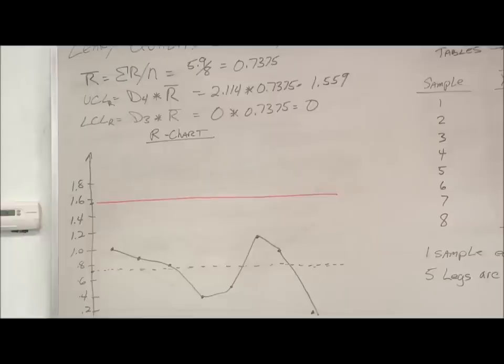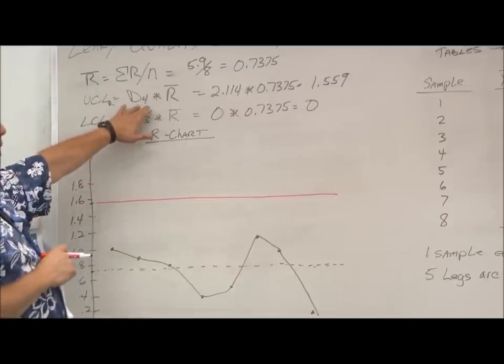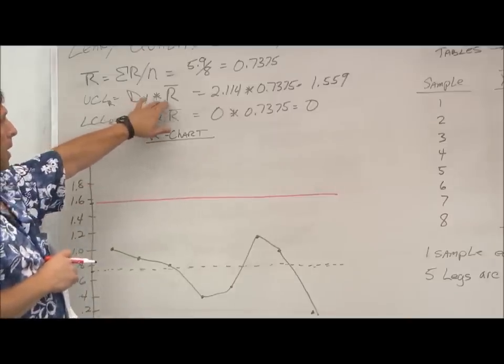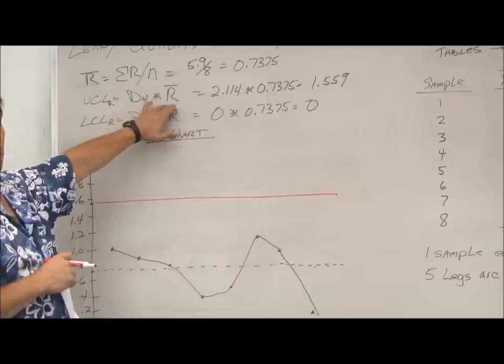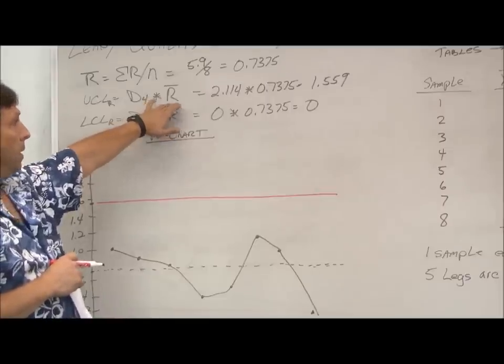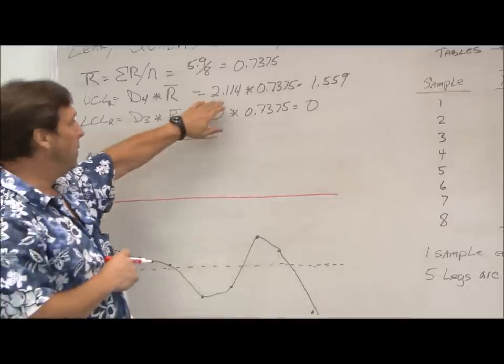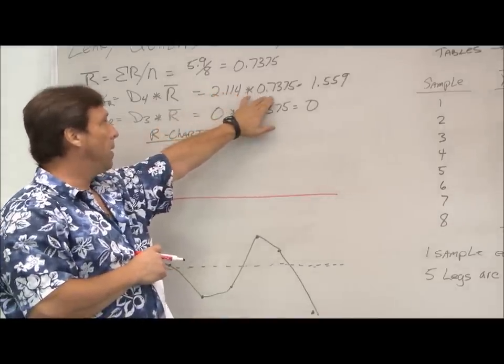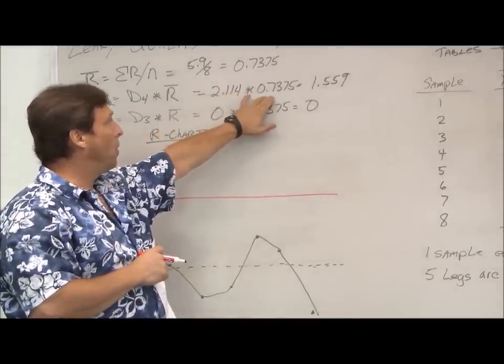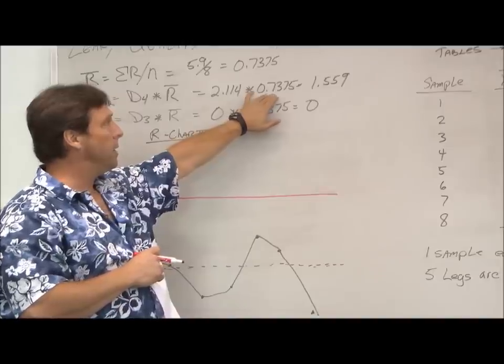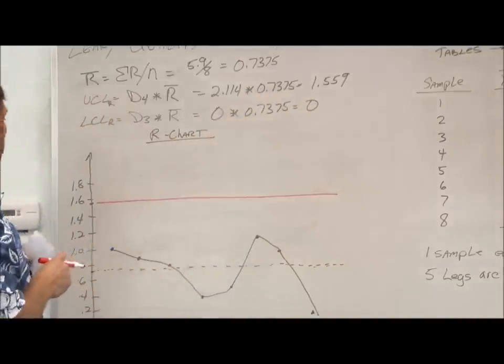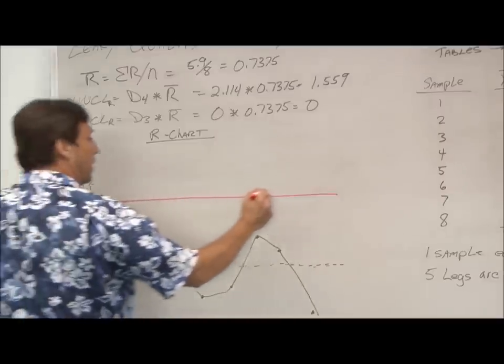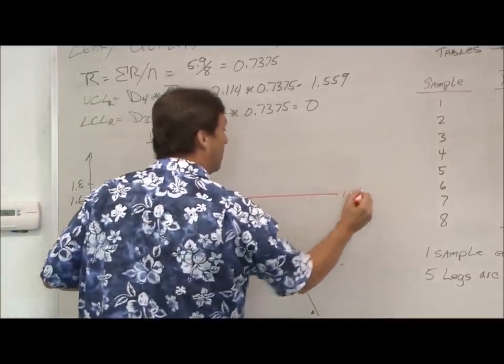So next, we have to look at the upper and lower control limits. The upper control limit is D4 times our average R, or our R bar. So from our chart, we found that our D4 is 2.114. We know that our average for our ranges is 0.7375, so that's 1.599. So that's my upper control limit here.